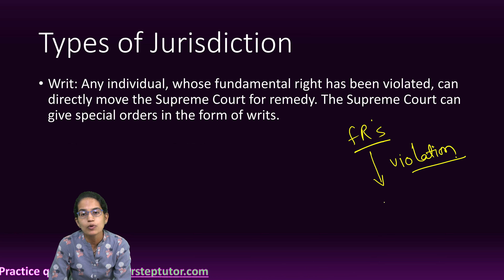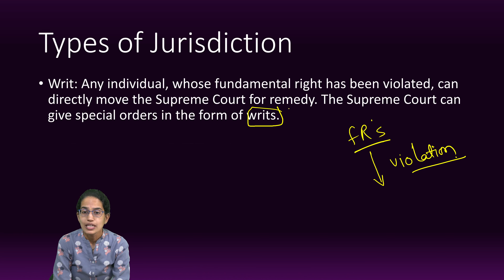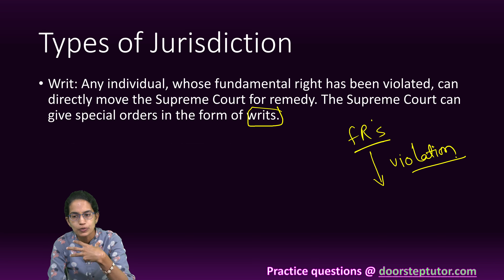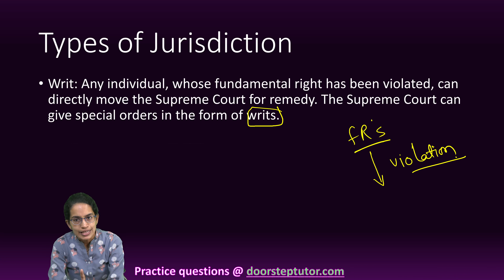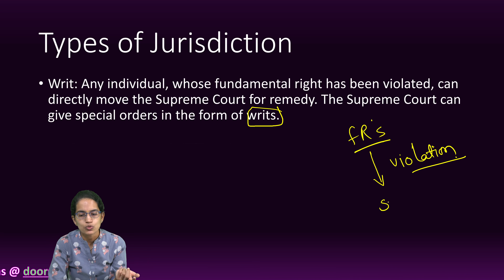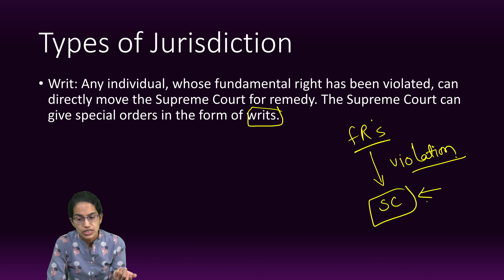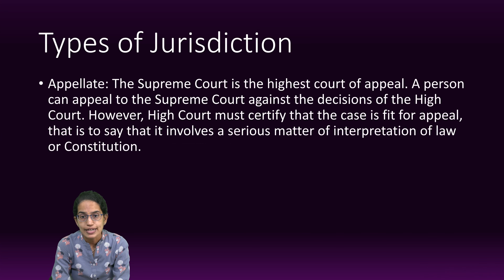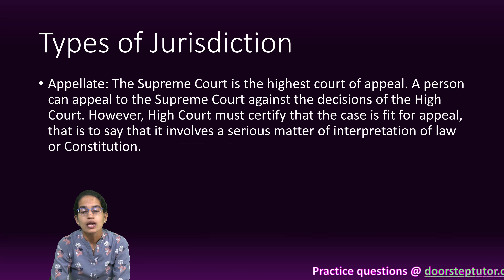The next is writs. In case the fundamental rights are violated for an individual, the person can directly move to the Supreme Court for a remedy. The Supreme Court has special orders known as writs — Habeas Corpus, Certiorari, Prohibition, Mandamus, and Quo Warranto — which we have covered in a separate lecture. In case the fundamental rights are violated, the person can directly reach the Supreme Court to get these special powers, and this is what is known as writs.